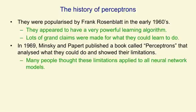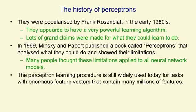But that result got wildly overgeneralised. When I started working on neural network models in the 1970s, people in artificial intelligence kept telling me that Minsky and Papert had proved that these models were no good. Actually, the perceptron convergence procedure, which we'll see in a minute, is still widely used today for tasks that have very big feature vectors — Google, for example, uses it to predict things from very big vectors of features.